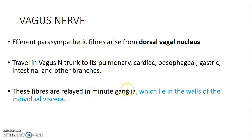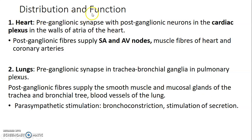The preganglionic fibers of the vagus nerve are very long, relaying at that region. For the heart, the preganglionic fibers will synapse with postganglionic fibers within the cardiac plexus, which are located on the walls of the atria of the heart. From there, the postganglionic fibers go and supply the sinoatrial and atrioventricular nodes and muscle fibers of the heart, as well as the muscles of the coronary arteries.